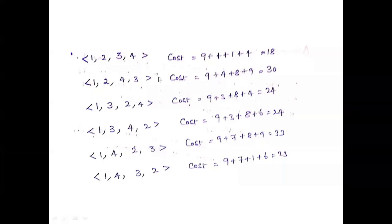With the first job fixed to person 1, we now change the job assignments for persons 2 through 4. The other combinations are: [2, 4, 3], [3, 2, 4], [3, 4, 2], [4, 2, 3], and [4, 3, 2] for the remaining persons. For example, for the combination [1, 3, 4, 2], the cost is 9 + 3 + 8 + 6 = 26.